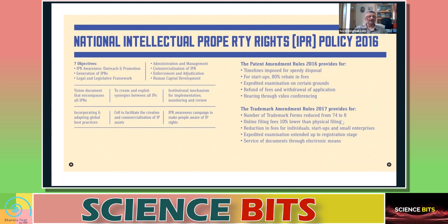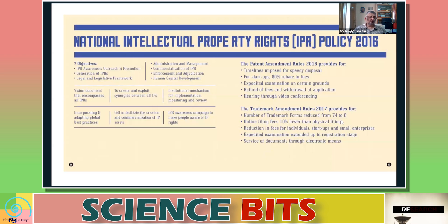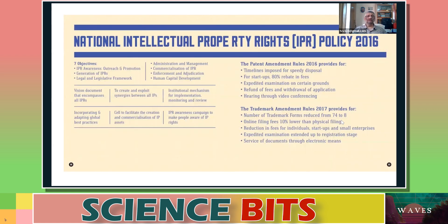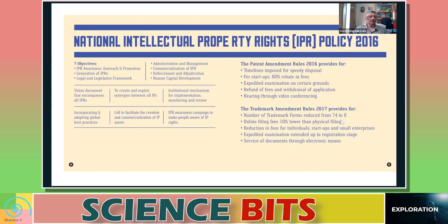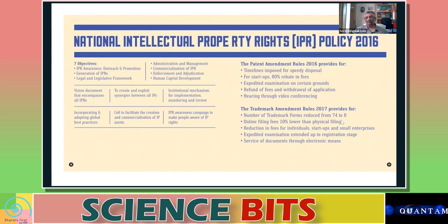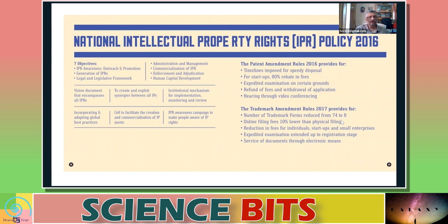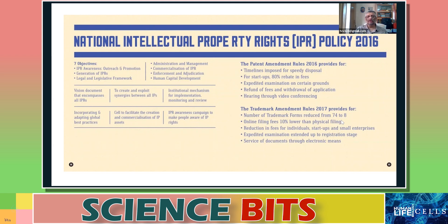Another objective is enforcement and education, because if there are claims and counterclaims, you need a setup to resolve them as soon as possible. Also, human capital development — if you are talking about industrial property, there should be people who are able to read the documents and make them properly. You need professionals — legal professionals and other kinds of professionals. If you are looking at science-related intellectual property, people should also have some idea of science. So you need to create the human capital. These were the broad seven objectives of the Intellectual Property Rights Policy of 2016.